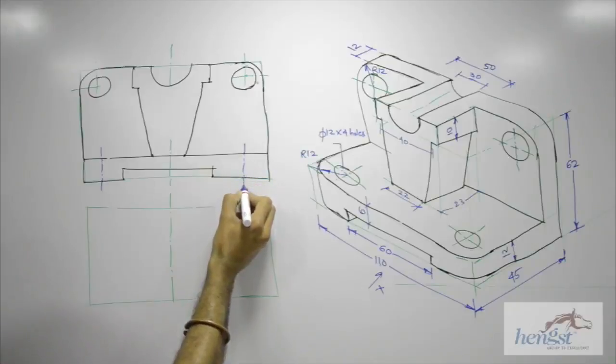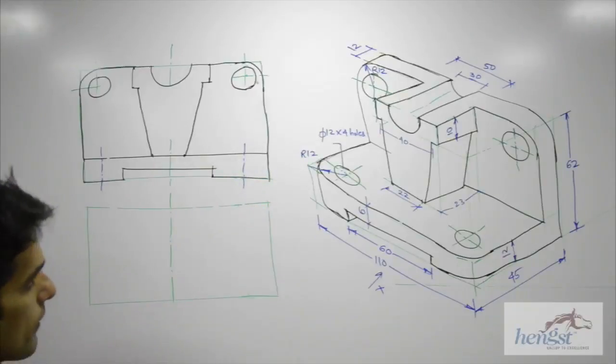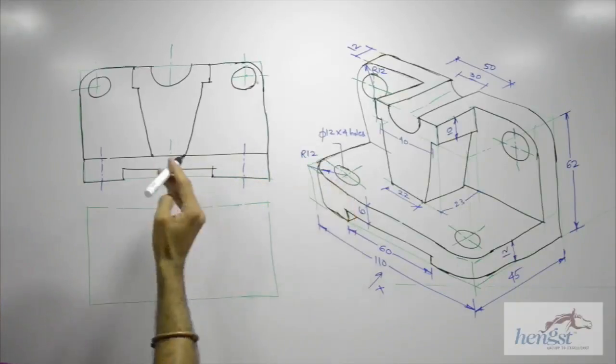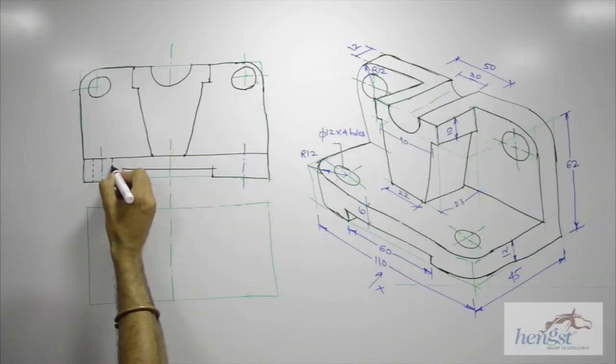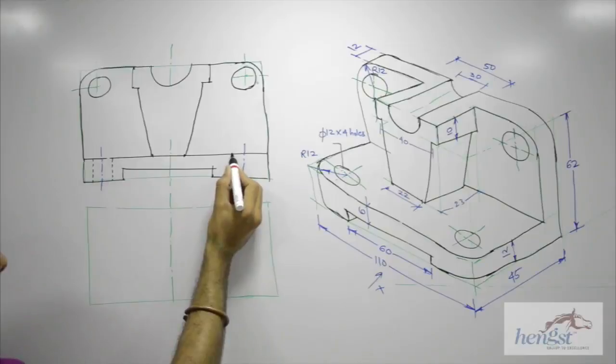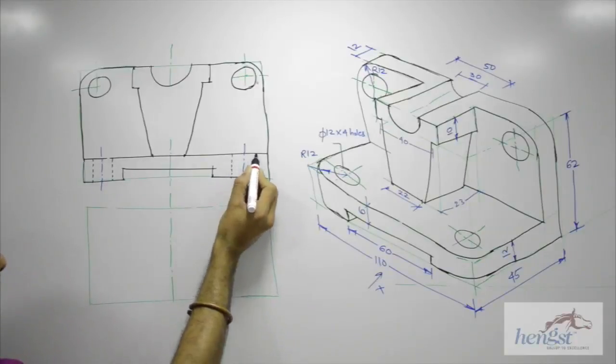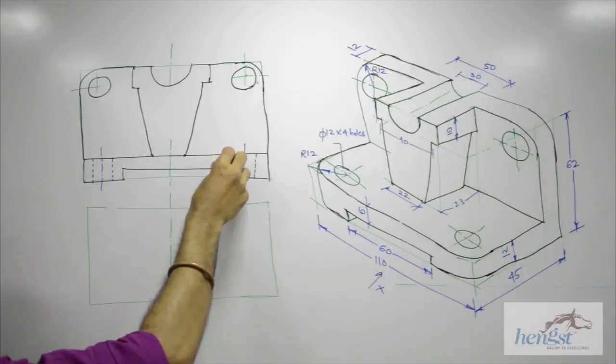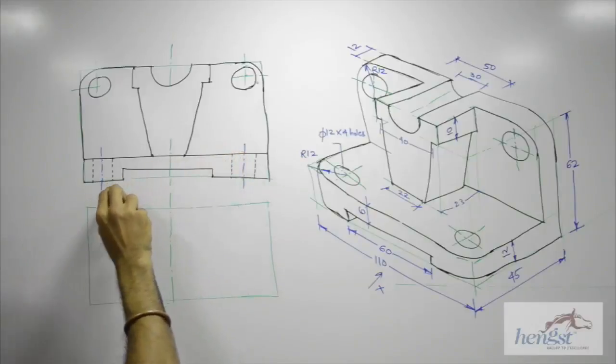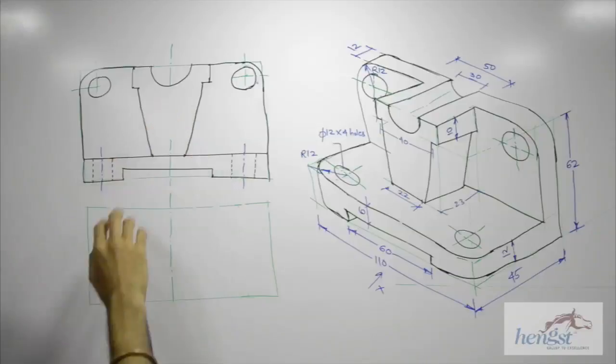And then take, how much is this diameter? 12. So you take 6 on both sides. So we are done with front view.